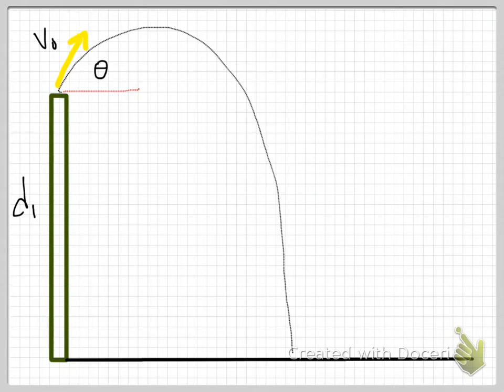This is an example problem of how to apply kinematic equations to an object in free fall. The situation is we are throwing a ball off of a tall tower. We're told that the tower is a distance d₁ above the ground, at y = d₁ if you put your origin at the bottom. We throw with an initial velocity of v₀ at an angle of θ₀.